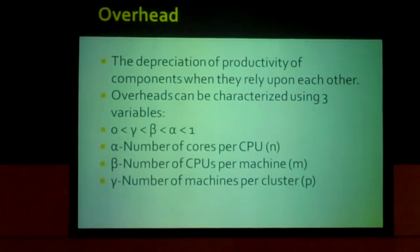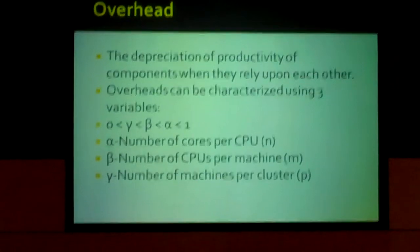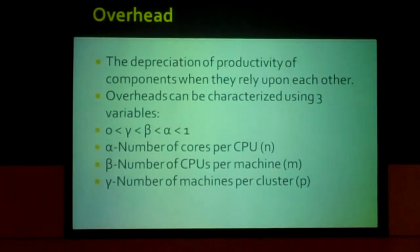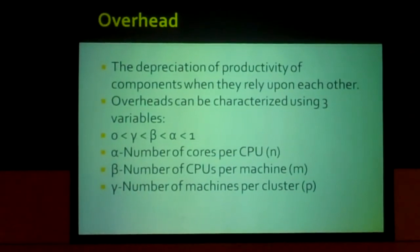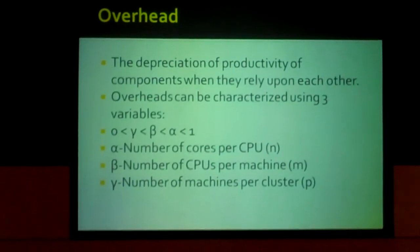Overhead is the depreciation of productivity of components when they rely upon each other. Overheads can be characterized using three variables: alpha, beta, and gamma. All of them are between zero and one, nearing one.